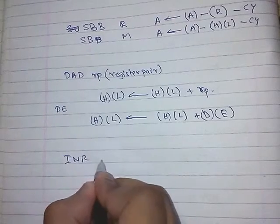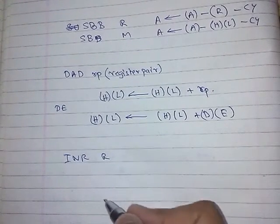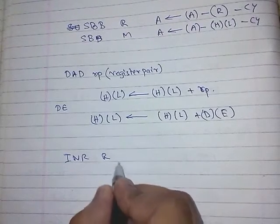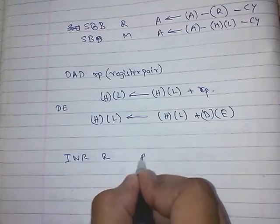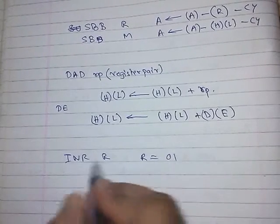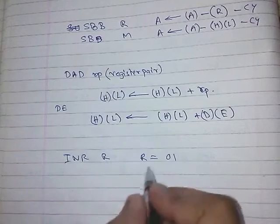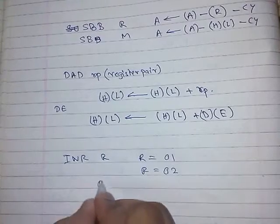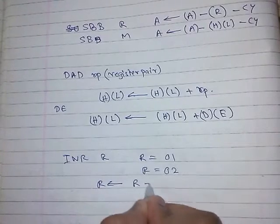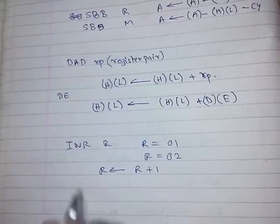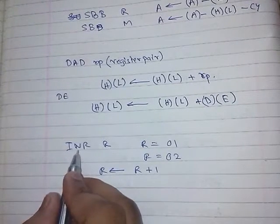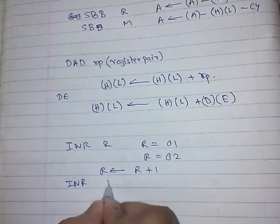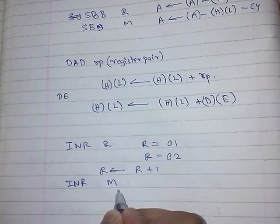More things that arithmetic instructions allow are increment and decrement. INR R will increment the register by 1. Suppose register R contains 01H — after execution of INR R, it will contain 02H. So INR R does: R = R + 1. Similarly, INR M will increment the memory location by 1.